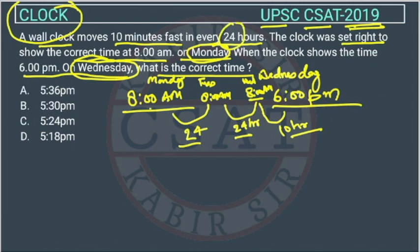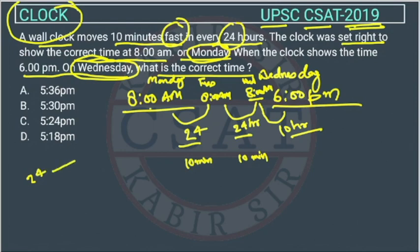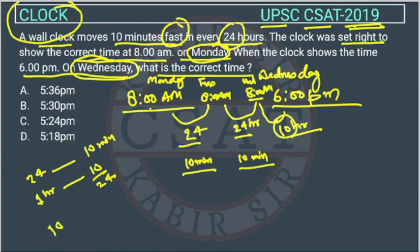We know that in 24 hours, the clock gets fast by 10 minutes. We will use the unitary method here. According to the unitary method: in 24 hours the clock gets fast by 10 minutes, so in 1 hour it will get fast by 10/24 minutes, and in 10 hours it will get fast by 10/24 × 10 minutes.